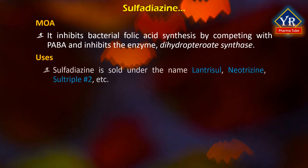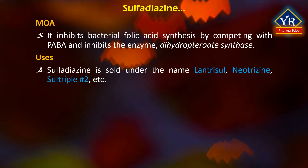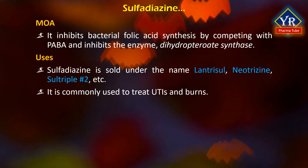Sulfadiazine is sold under the names Lantrisul, Neotrisin, Sultriple No. 2, etc. It is commonly used to treat urinary tract infections and in the form of silver salts, i.e. silver sulfadiazine, as an external antibacterial agent primarily for treating burns.